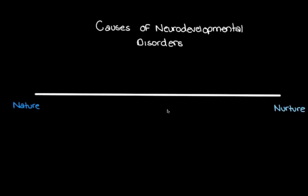You've probably heard these terms before — nature and nurture. When we say nature, we're talking about things that are innate, things that we are born with. For example, our DNA, our genetic instructions inside our cells that tell our body what to do and what to make. This is part of our nature. Let's put genetics down on the nature side of our spectrum.